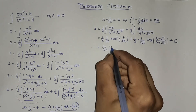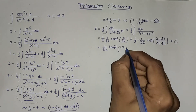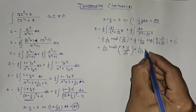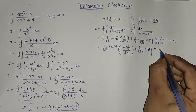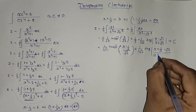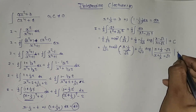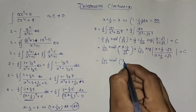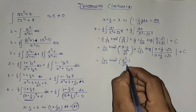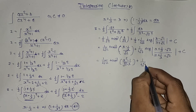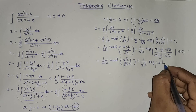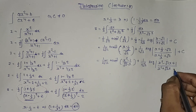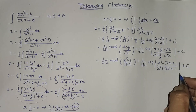Substituting back: (1/(2√2)) · tan⁻¹((x - 1/x)/√2) plus (1/(4√2)) · log|(x + 1/x - √2)/(x + 1/x + √2)| + C. Simplifying: (1/(2√2)) · tan⁻¹((x² - 1)/(√2·x)) plus (1/(4√2)) · log|(x² - √2·x + 1)/(x² + √2·x + 1)| + C. That is our answer.